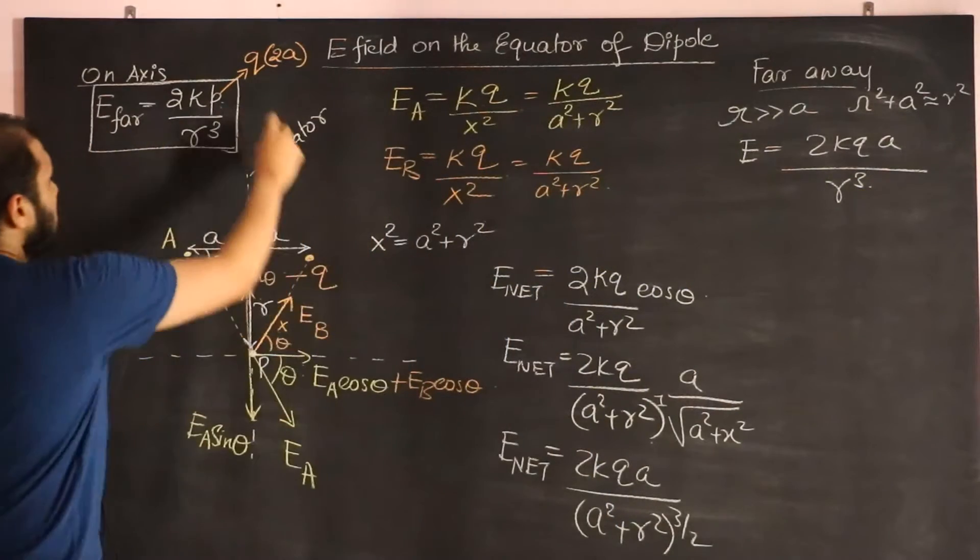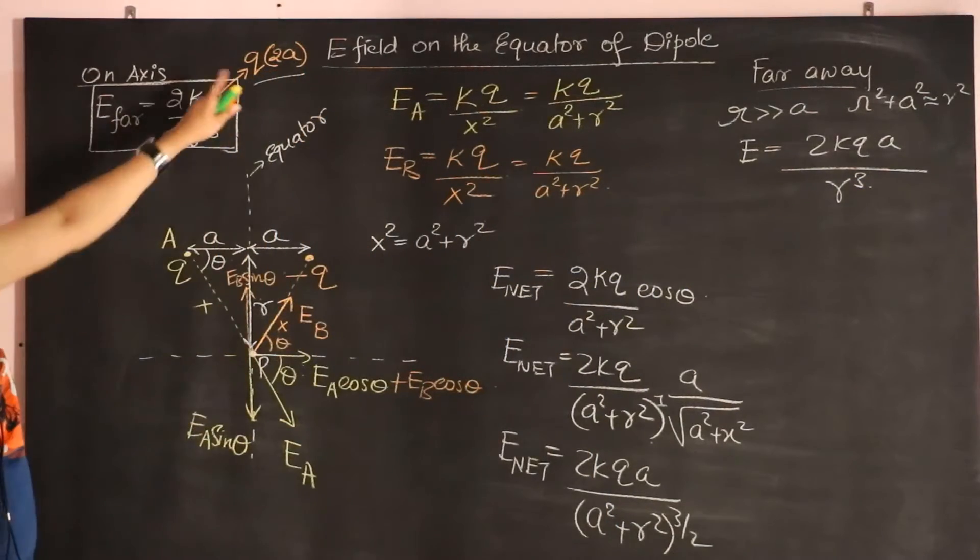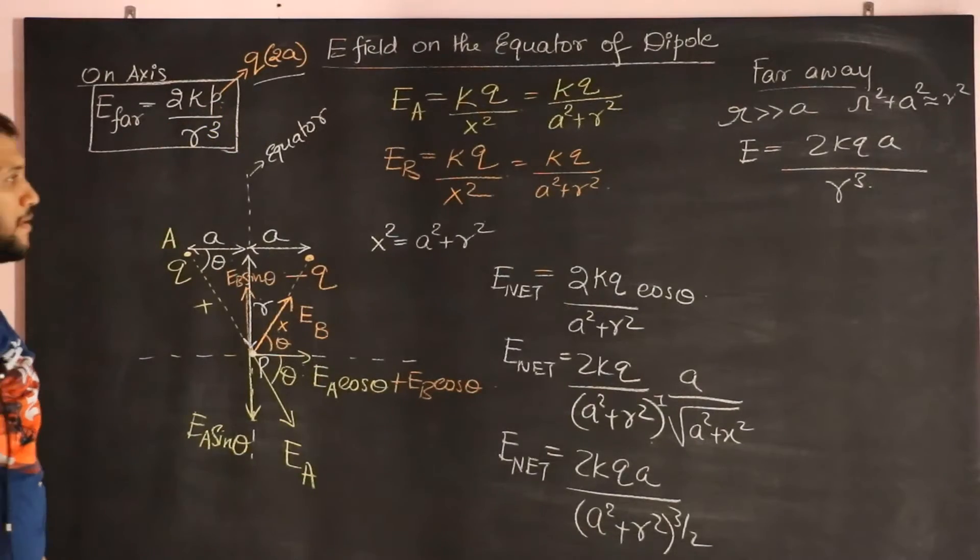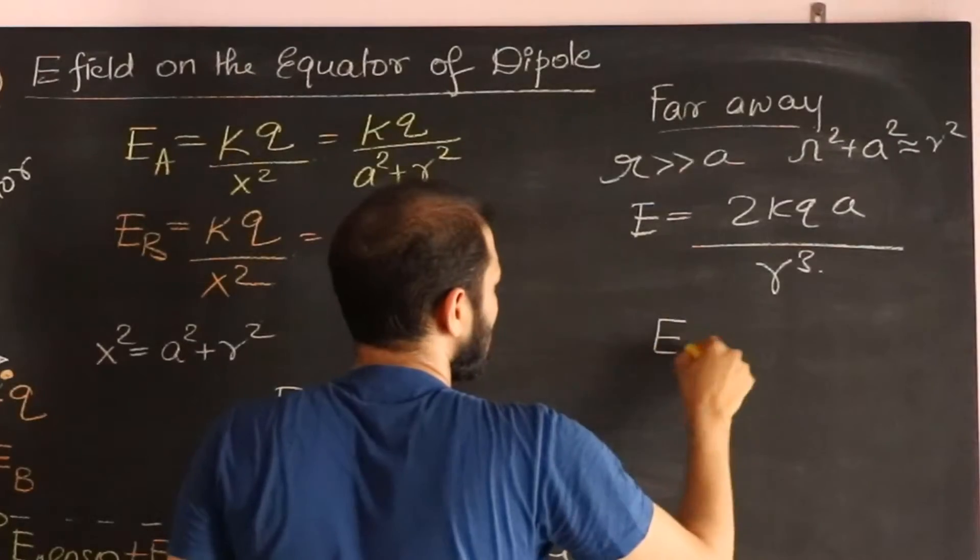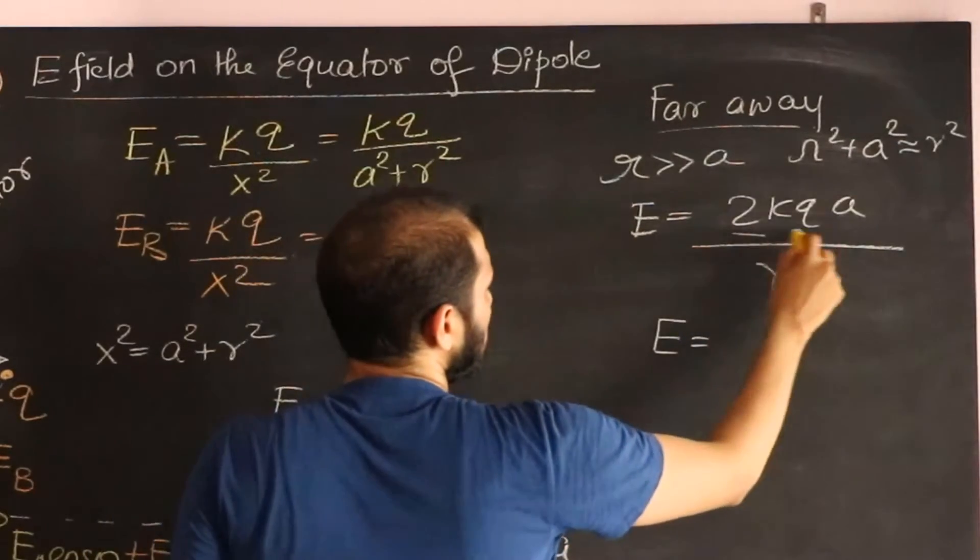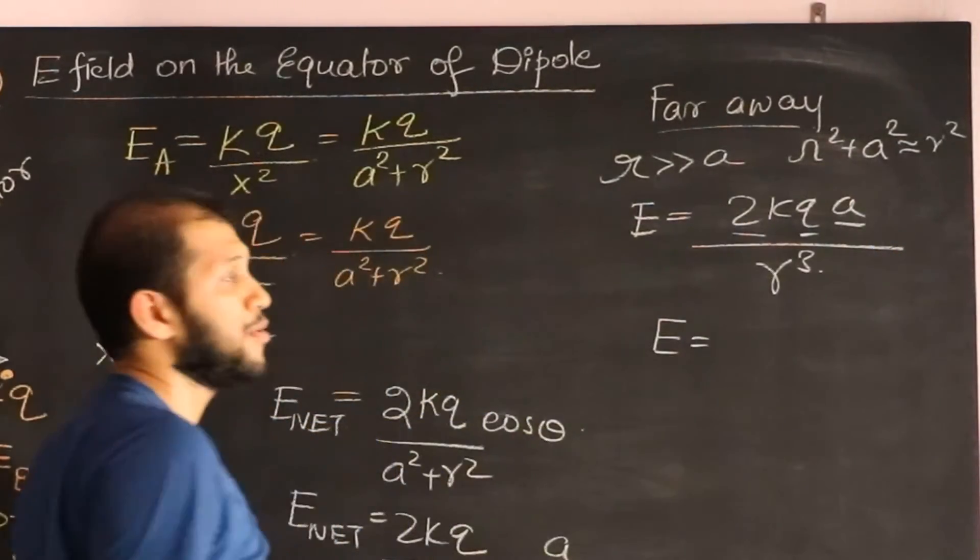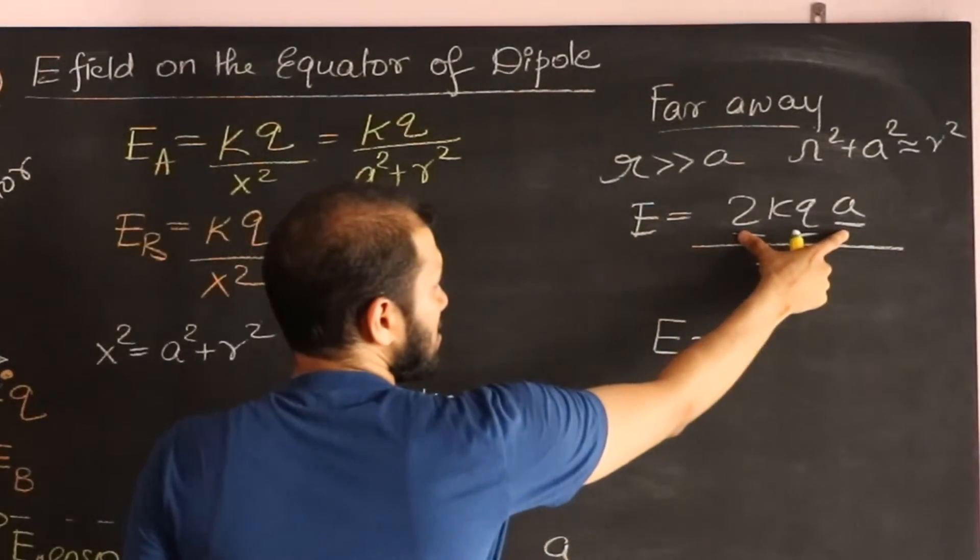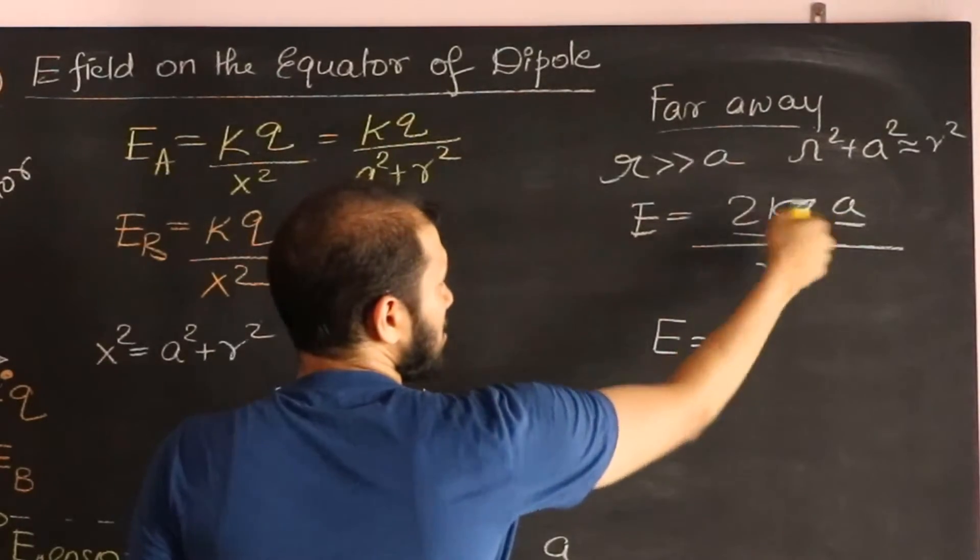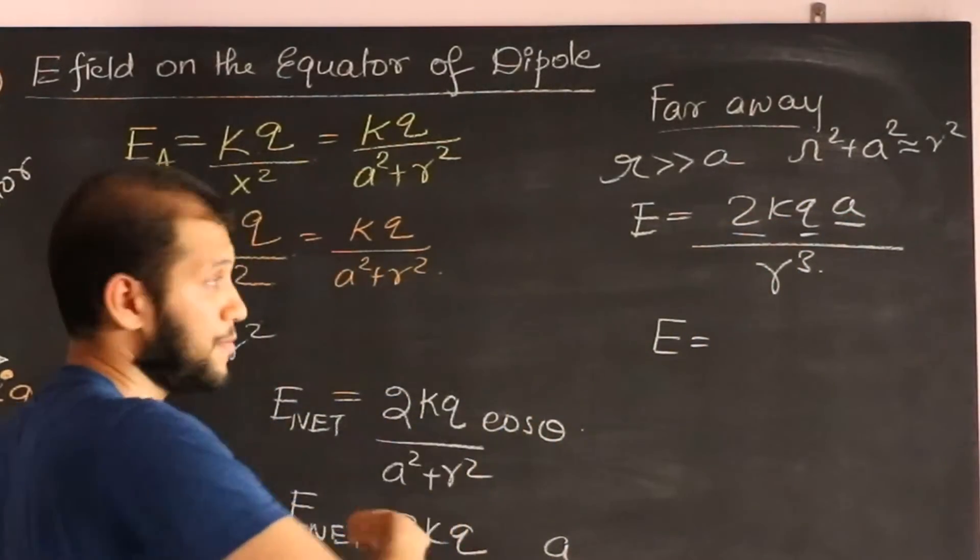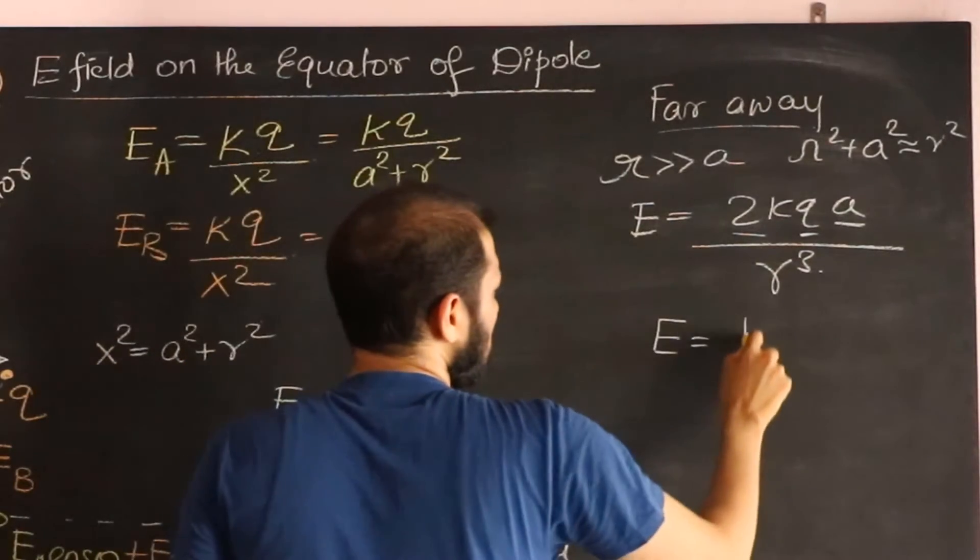And then if you use this one—Q times 2A is the dipole moment—then we can rewrite this formula now. Here, 2A and Q: that is the dipole moment. 2A is the distance and Q is the charge. Charge multiplied by the distance of the two charges is the dipole moment.